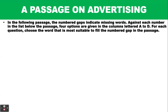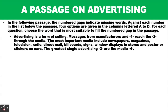Now let's look at a passage on advertising and test our knowledge by choosing the appropriate words to fill in the gaps. In the following passage, the numbered gaps indicate missing words. Against each number in the list below the passage, four options are given in columns A to D. Questions like this usually occur in the West African Senior School Certificate Examination or other senior school certificate examinations. You can also find it in other English exams testing your knowledge of vocabulary.